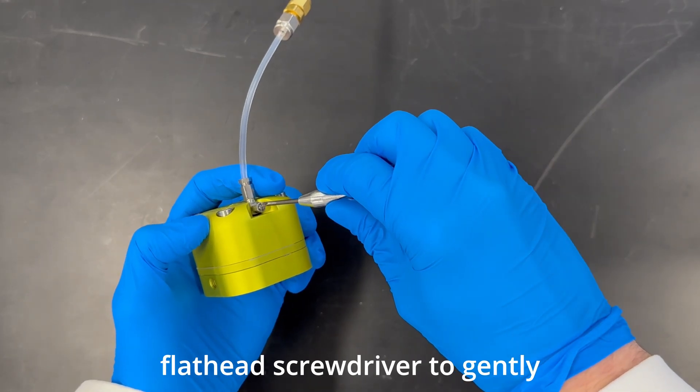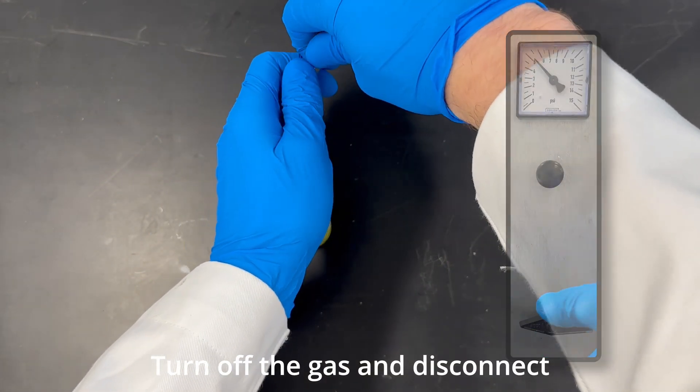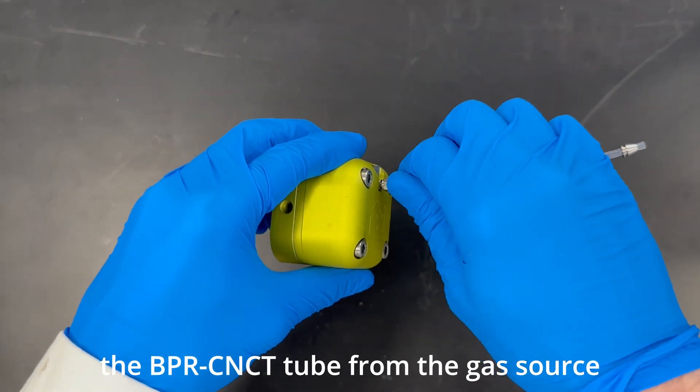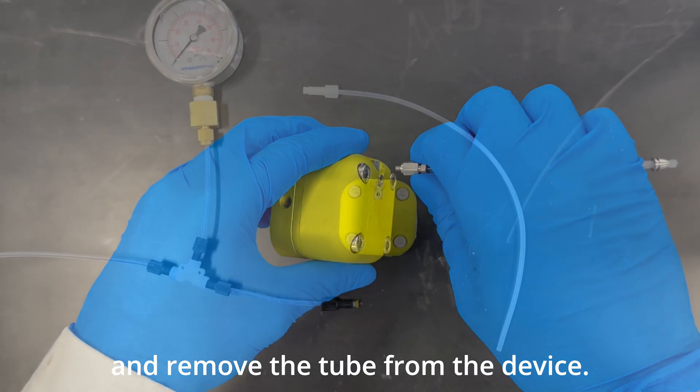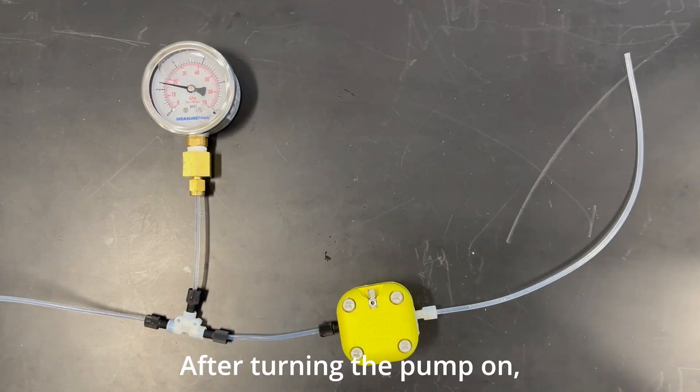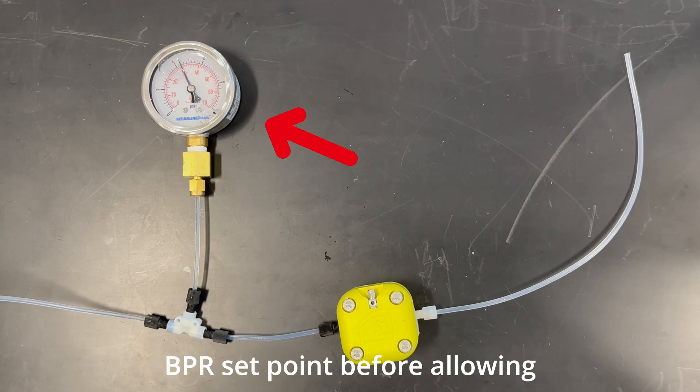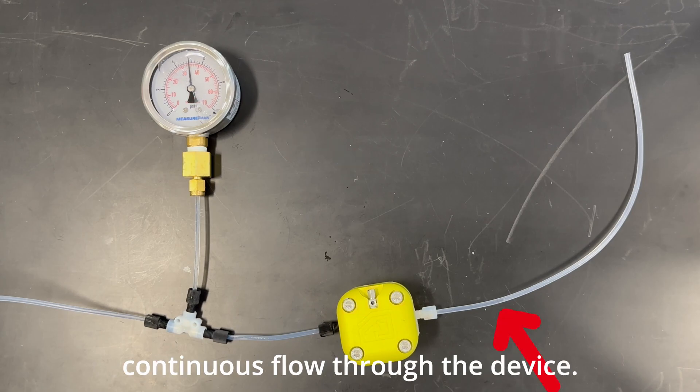Turn the gas on and use the flathead screwdriver to gently close the pressure valve. Turn off the gas and disconnect the BPR connect tube from the gas source and remove the tube from the device. Connect a pump and outlet tube to the BPR. After turning the pump on, it can be seen the pressure before the BPR increases to the BPR setpoint before allowing continuous flow through the device.